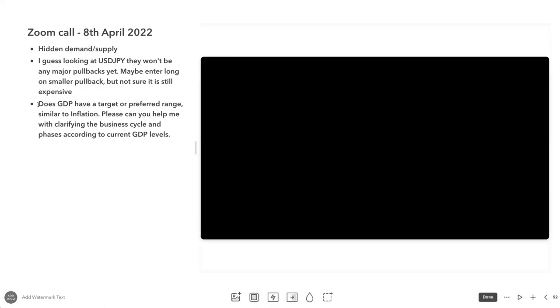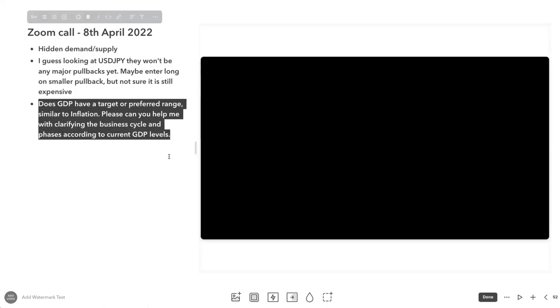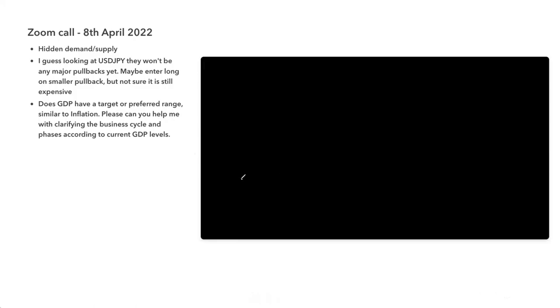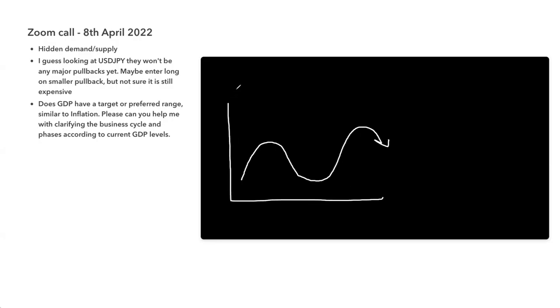Continuing on, I want to answer this question first about GDP cycles and finding out if there's a preferred range. There isn't a preferred range when it comes to GDP growth. Generally you see what's known as the business cycle or economic cycle, where you have growth over time. In an economic cycle you start with boom, contraction, recession, bust or slump, recovery, expansion.